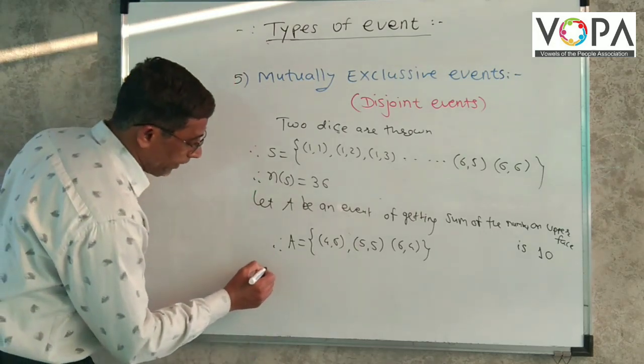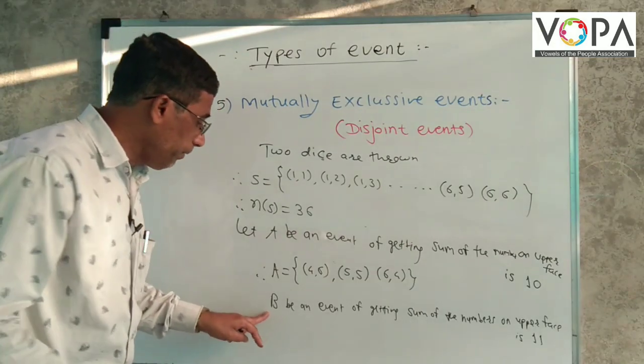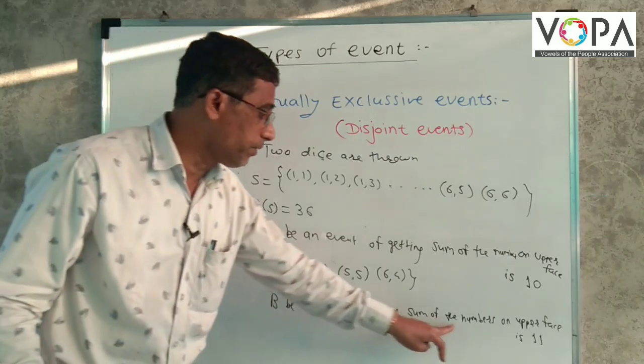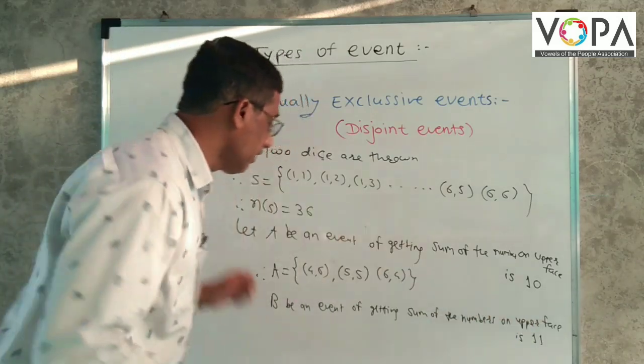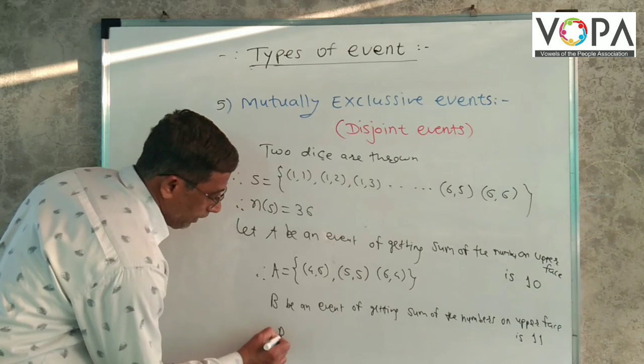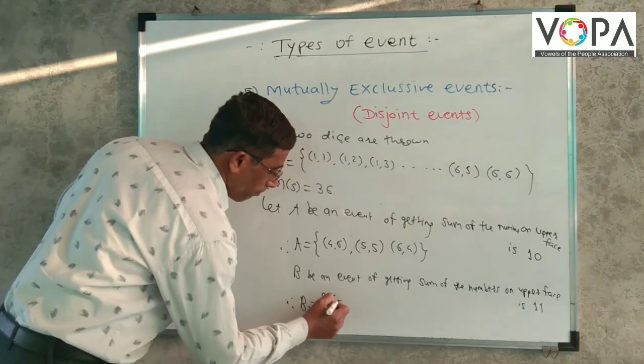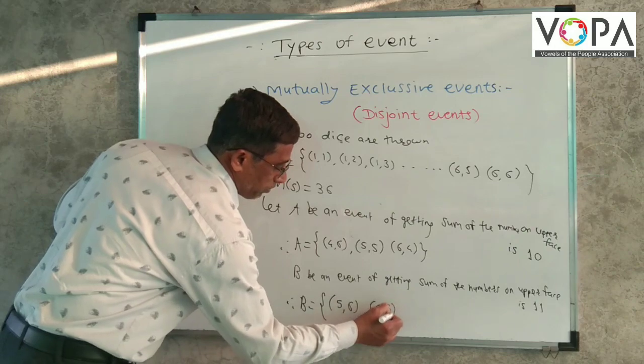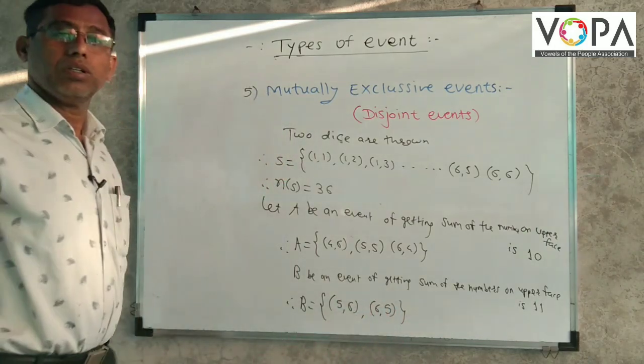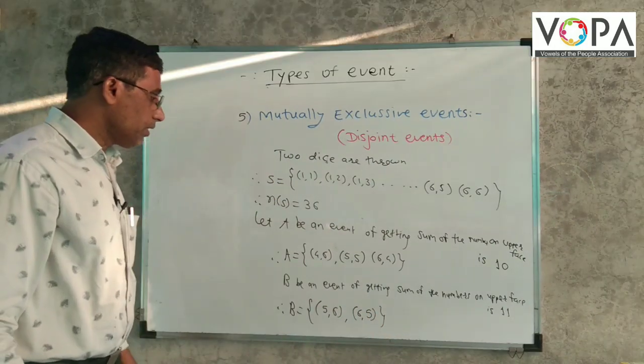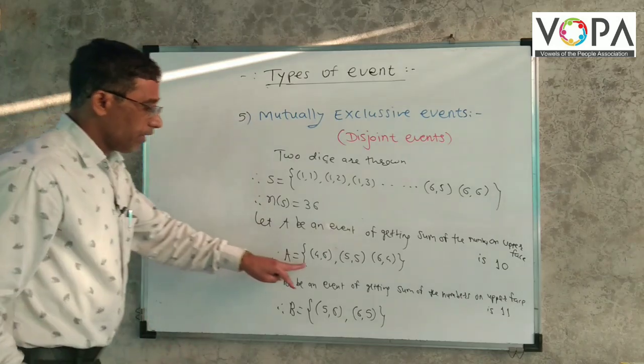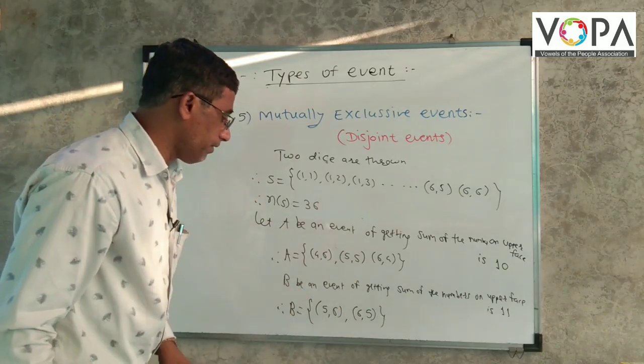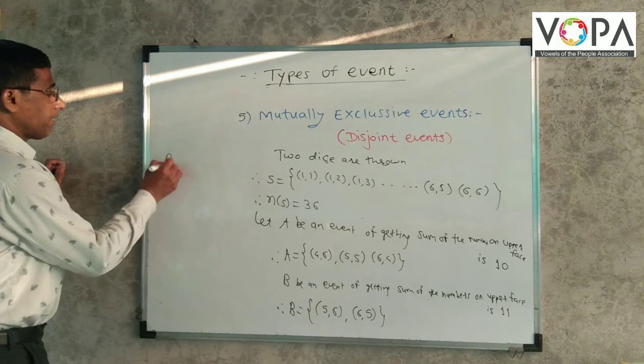Now, we take B event. B be an event of getting sum of the number on the upper face is 11. Then what is the element? (5,6), (6,5) means A and B have no common elements means their intersection is empty.